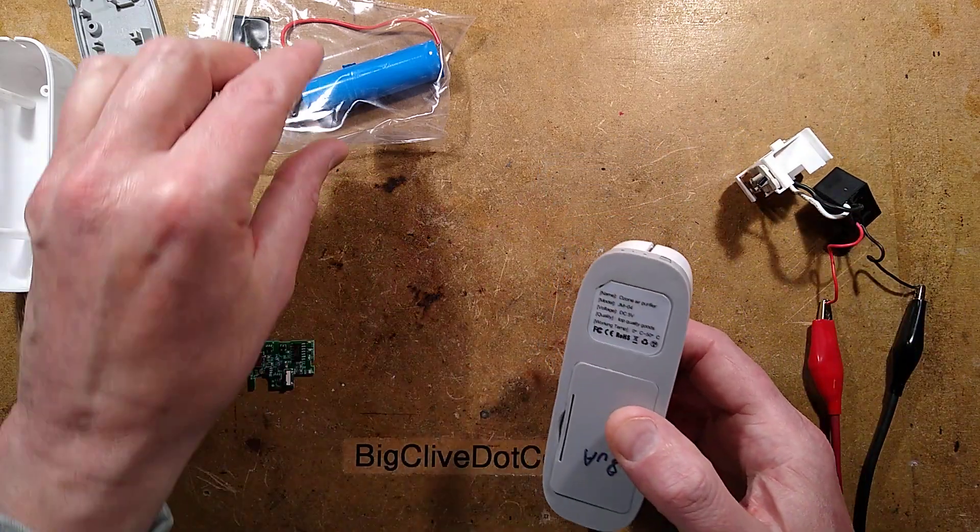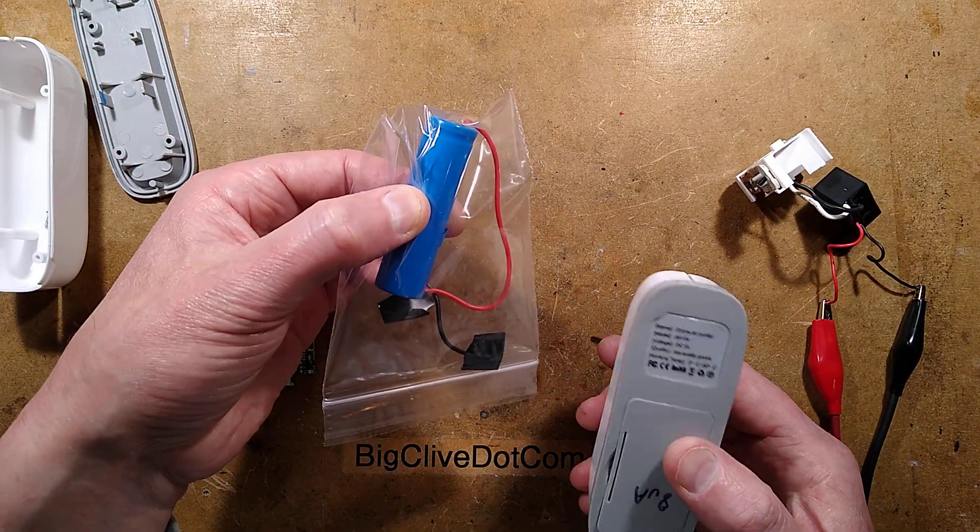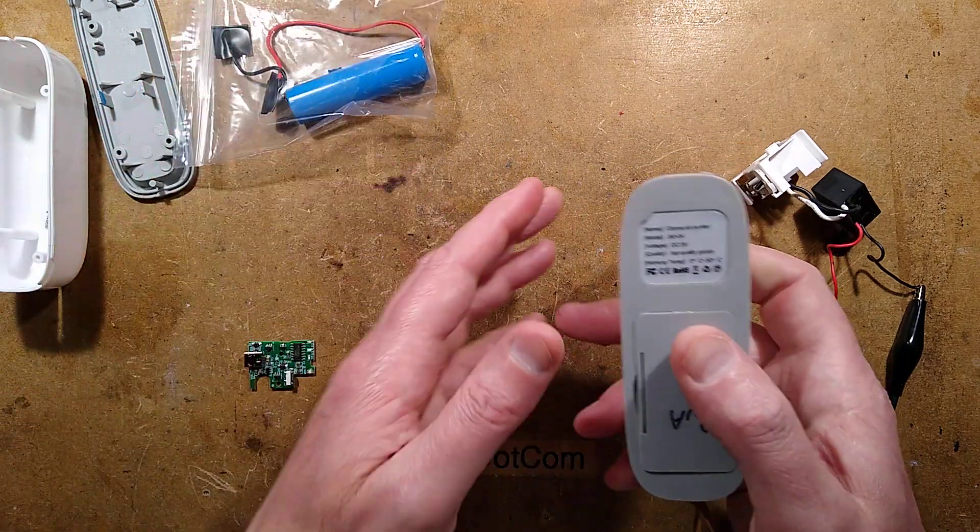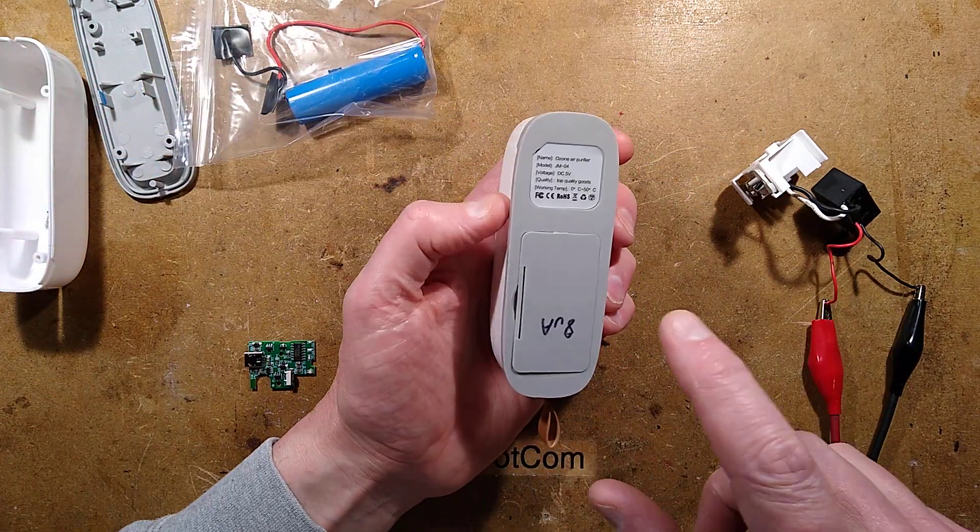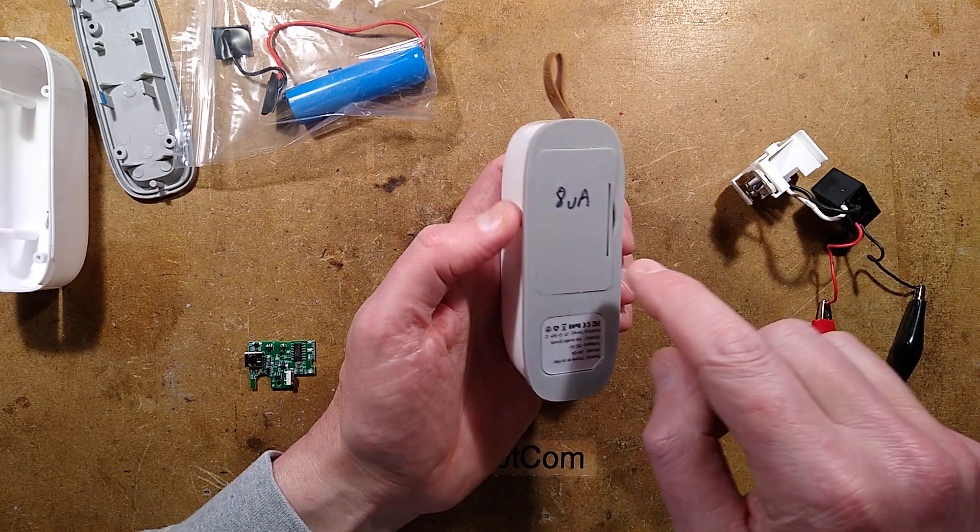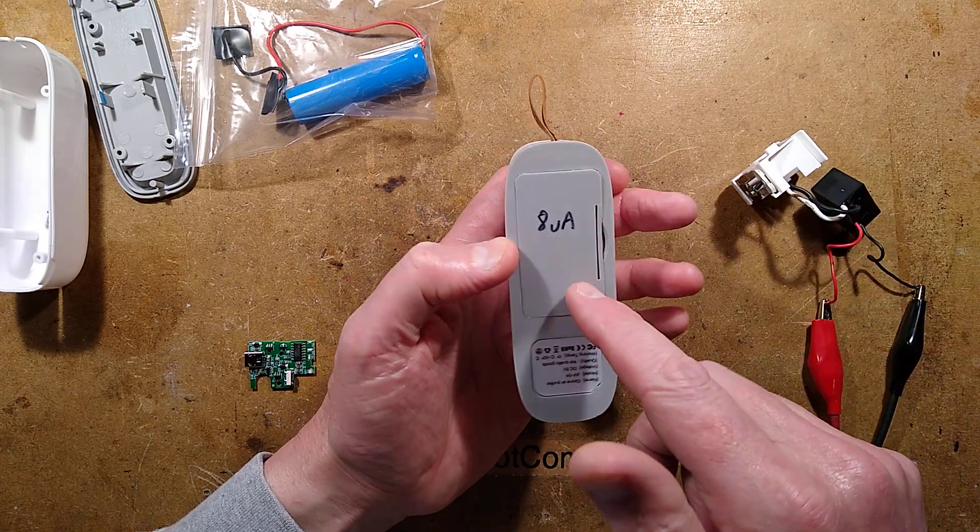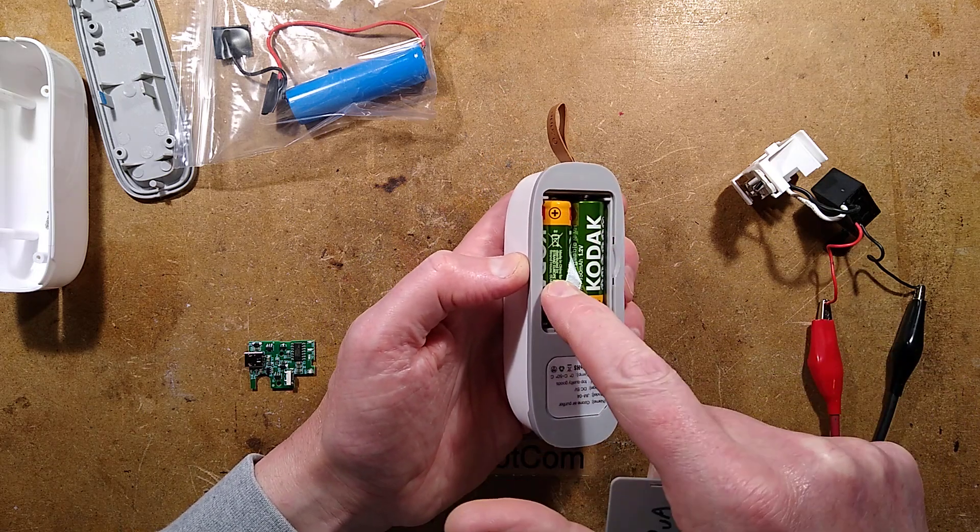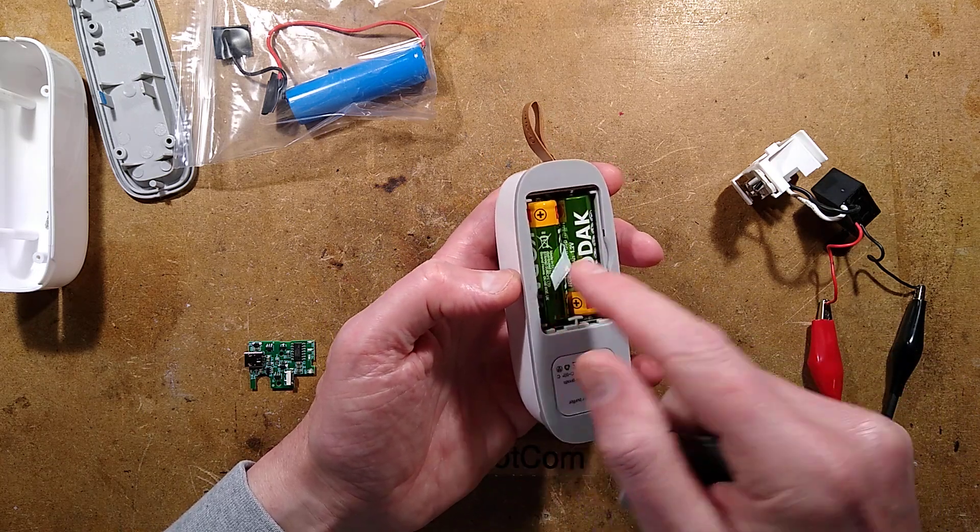They're available in two versions. One which has an 18650 cell, a slightly disappointing 1A power cell, but you know, we can do things about that. We can change these cells. And the other type with its very low quiescent current of 8 microamps, this one takes standard AA batteries, it takes a set of four of them.